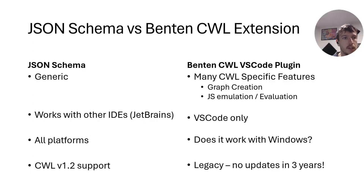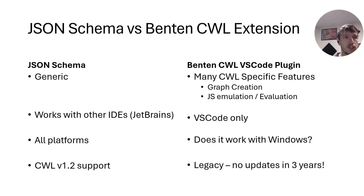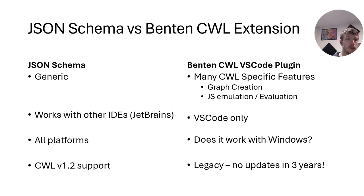JSON Schema isn't the only tool that people can use to write their CWL code. Another example is the Benten CWL extension, and I think it itself has its own JSON Schema as well. There are certainly some benefits to using Benten — it's very CWL specific, so it can create graphs of your CWL workflows on the fly, and it can also even emulate and evaluate your JavaScript as well. I could never really get the Benten server working on my Windows computer, and I like to code in JetBrains for the multi-line editing, so I wasn't going to switch to VS Code just for the Benten extension. Another thing is that the JSON Schema is generic, so it is going to work across all your IDEs, will be available on all platforms, and does have CWL 1.2 support.